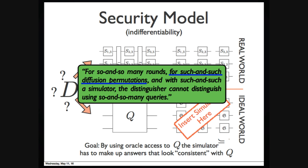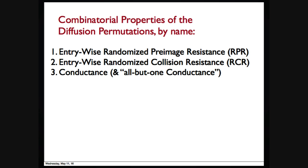Now, let's explore what diffusion permutation we use. In this study, we have explored several combinatorial properties that would be very useful for diffusion permutation. This is some terminology we invented. They are: entry-wise randomized pre-image resistance, or RPR; entry-wise randomized collision resistance, or RCR; and conductance. We would explore them one by one.